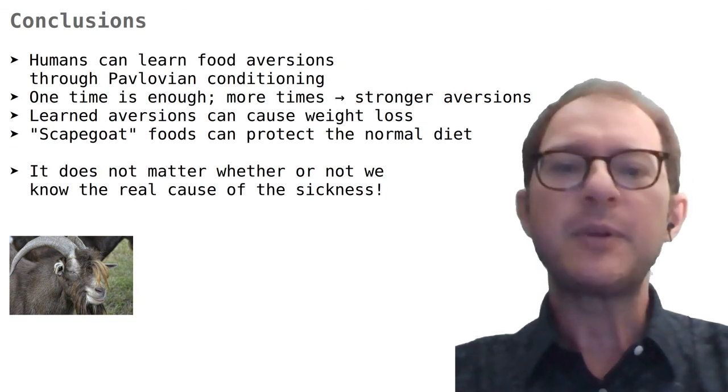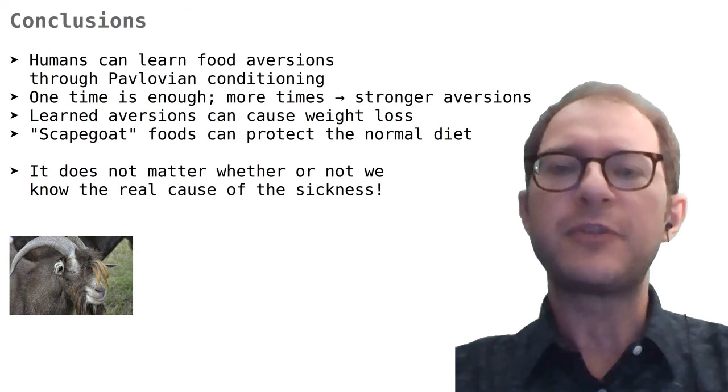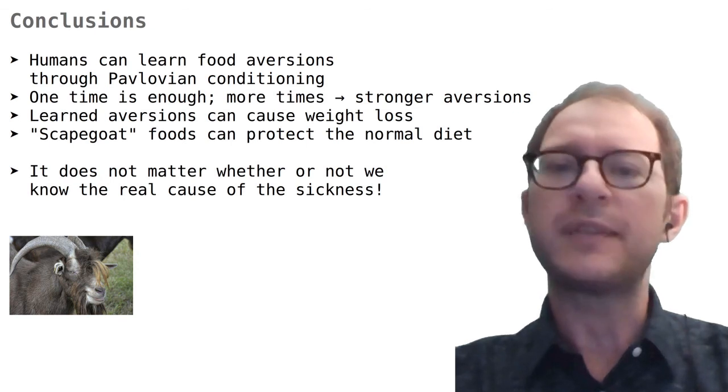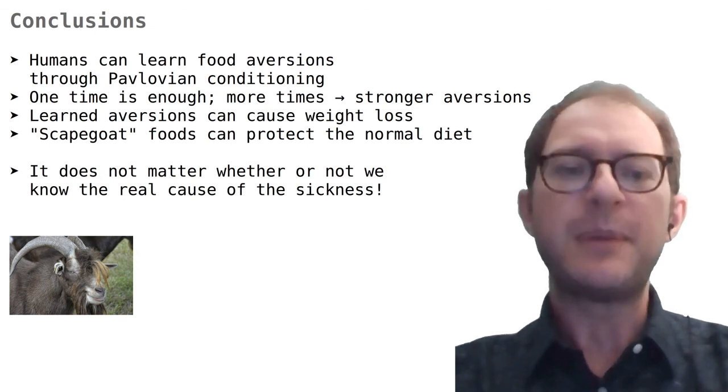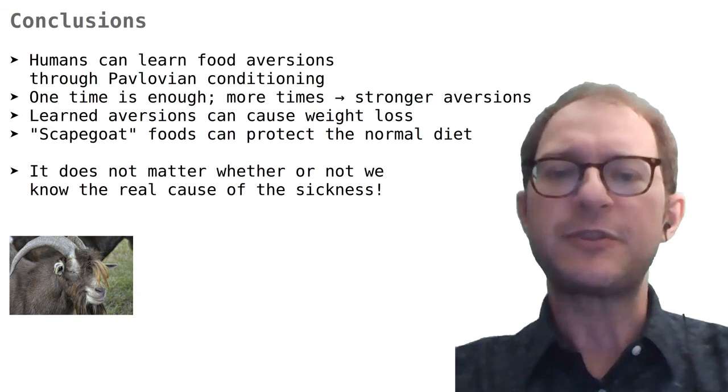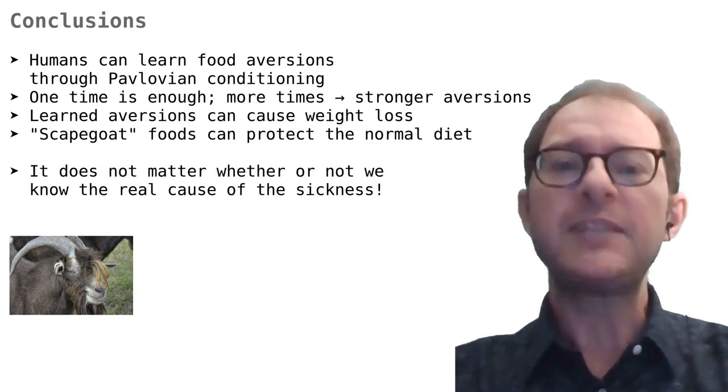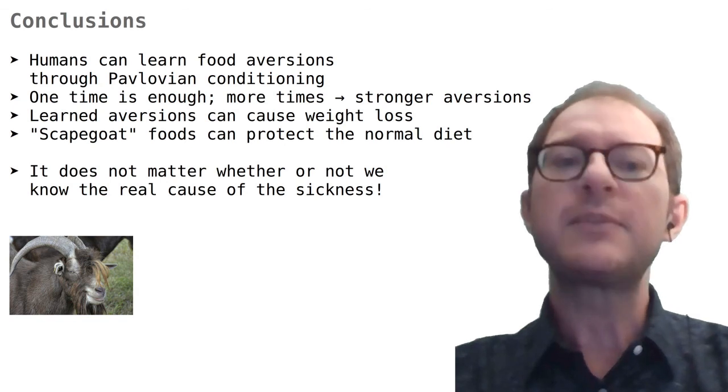Lastly, I want to stress that in these and other cases of unconscious learning, it does not matter whether we know or not the real cause of the aversion. We can explain a hundred times to cancer patients that it's the drug that makes them sick, and not the pancakes or whatever they eat for breakfast. The part of the brain that learns taste aversion is very ancient and does not understand language. It reasons more or less like a rat. It's what I like to call the brain you cannot talk to.